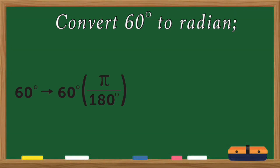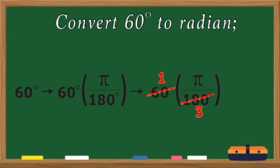We need to express 60 and 180 in the simplest form by dividing both with their GCF. Since the GCF of 60 and 180 is 60, we divide: 60 divided by 60 is 1, and 180 divided by 60 is 3. We now have pi over 3. Therefore, 60 degrees is equal to pi over 3.